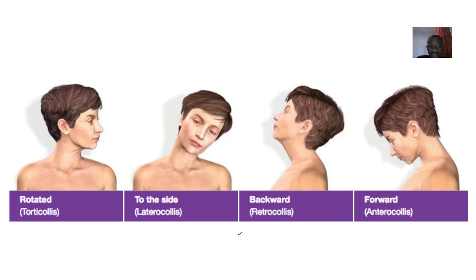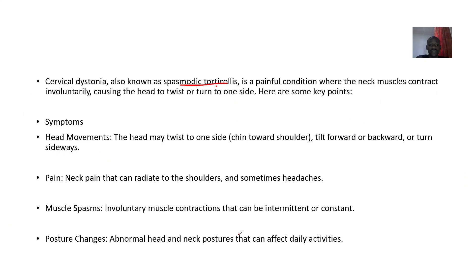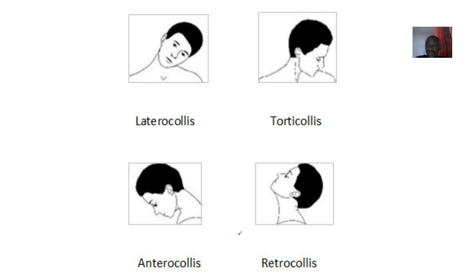To recap: if the head is rotated, that's called torticollis. If it is to the side, that's lateral collis. If it is backward, that's retro collis. And if it is forward, that's anterior collis. That's all about the concept of cervical dystonia.